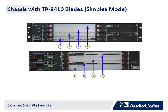The chassis with TP8410 blades in Simplex mode hosts the following: (1) Front panel slot 1, TP8410 blade; (2) Slot 2, synchronization and alarm blade; (3) Slot 3, covered with a blank panel; (4) Slot 4, covered with a blank panel; (5) blank panels covering unoccupied slots; (6) Rear panel slot 2, RTM8410 providing PSTN E1/T1 and dual Gigabit Ethernet interfaces; (7) Slot 4, RTM8410 providing more PSTN E1/T1 interfaces and Gigabit Ethernet interfaces for 16-span Simplex configuration.